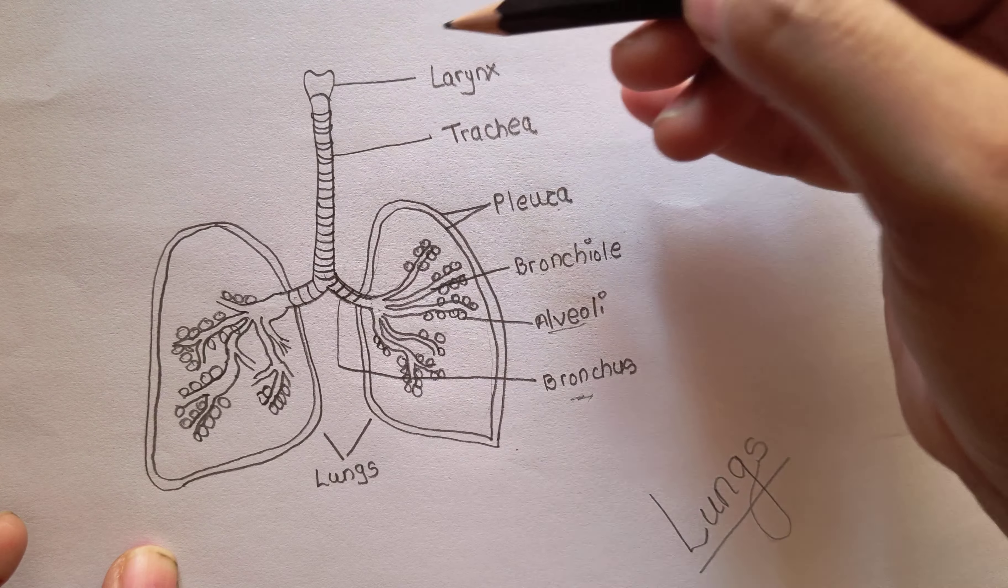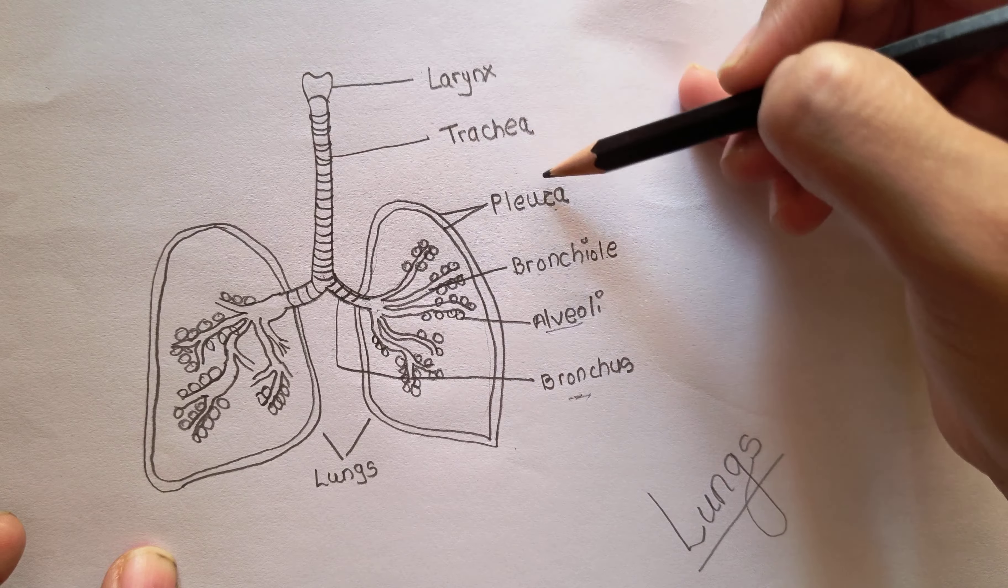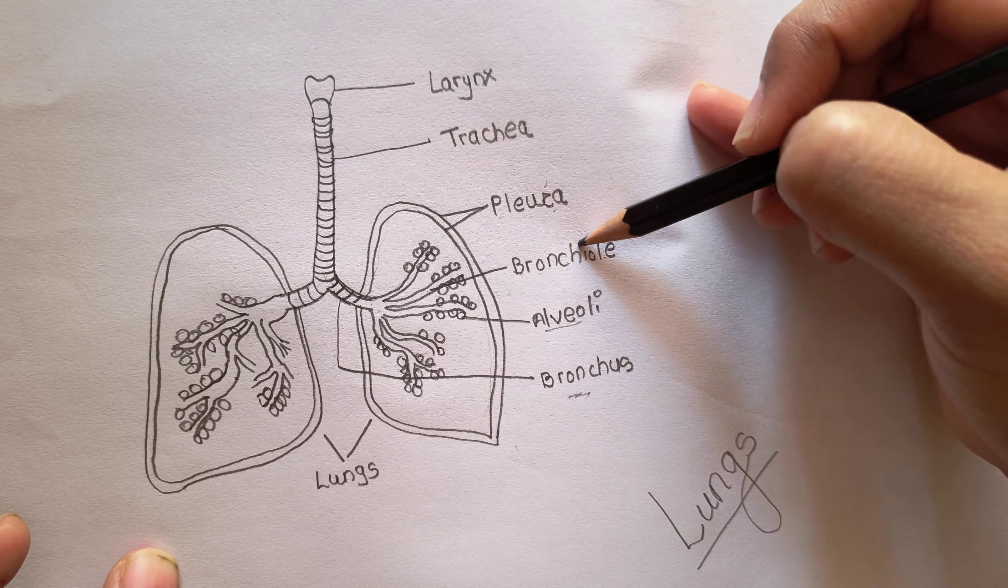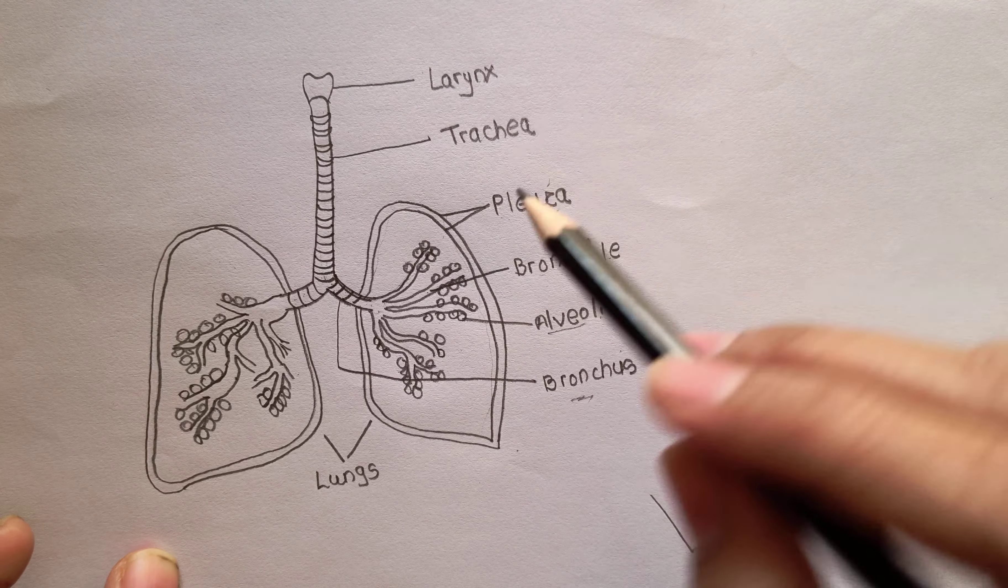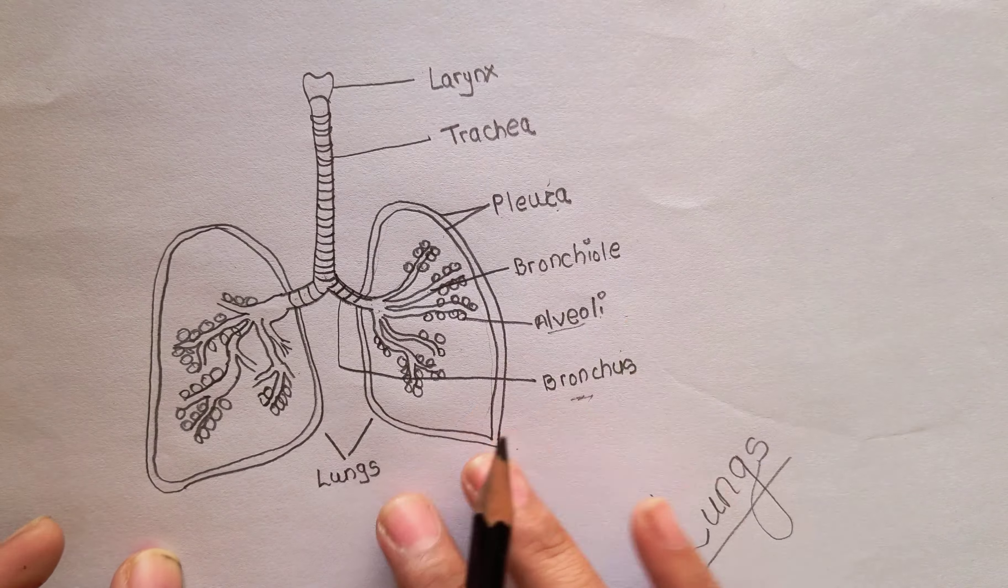Our lungs have larynx, trachea, pleura, bronchule, alveoli, and bronchus. These are the parts of lungs and the diagram of lungs.